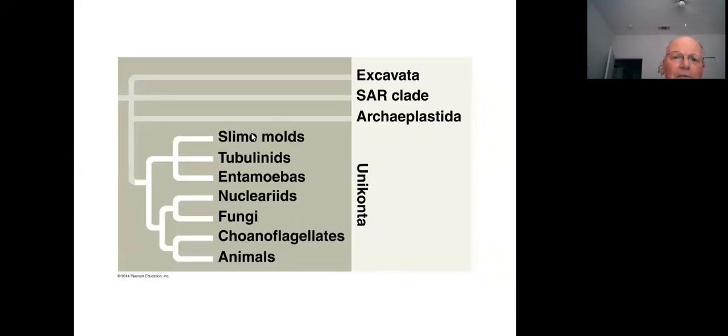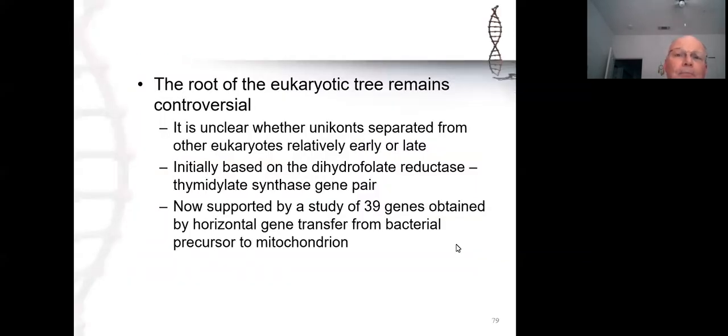Within the amoebozoans we have the slime molds, the tubulinids, which are not covered in the latest edition of the textbook but I've put in the notes. The tubulinids are the classic non-parasitic free-living amoebas. Then the entamoebas are the parasitic amoebas that make you very sick and can potentially kill you. We've got the nuclearids, the closest protist relatives of the fungi, and the choanoflagellates, the closest protist relatives of the animals. But we want to look at the slime molds, tubulinids, and entamoebas.